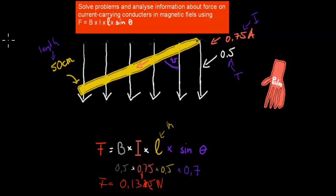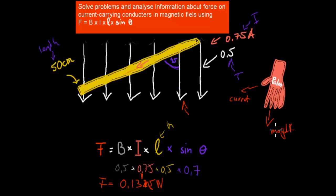And because it's a force, we also need a direction. Our thumb represents the current, which is going to the left. So our thumb should be pointing left. Then your fingers, representing the magnetic field, are going down. When you do that, your palm is still facing you, which means the force is coming towards you. So our force is 0.131 Newtons and the direction is out of the page, towards your face.